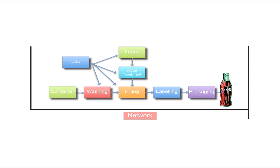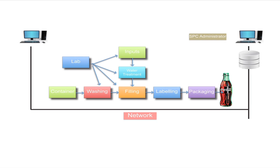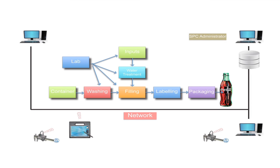Now let's see how this is set up in a plant. Datalyzer consists of different modules. The SPC administrator uses the administrative module to create characteristics and set up the complete system. The data will be stored in a database. On the shop floor, a satellite module will be installed in the different processes — this can be done on existing PCs, for example in the quality lab. Data entered is immediately available in the database. Handhelds or tablets can be used to enter data or view process results. Gauges can be connected to PCs or data can be extracted from external sources.